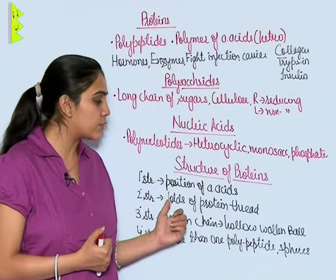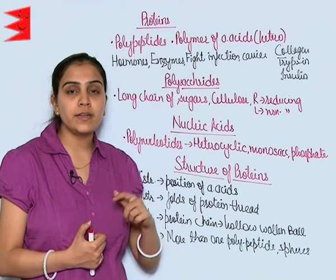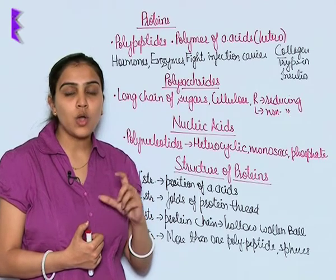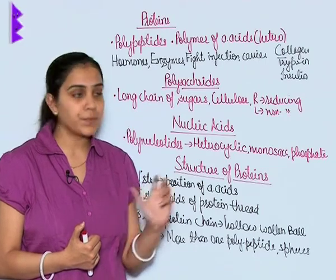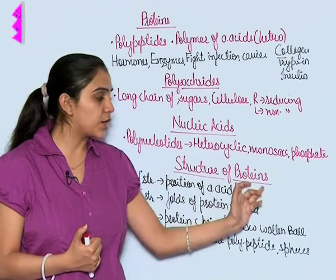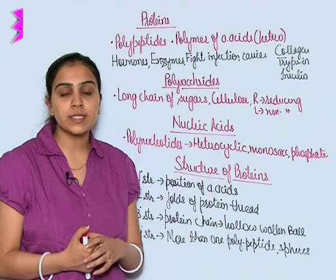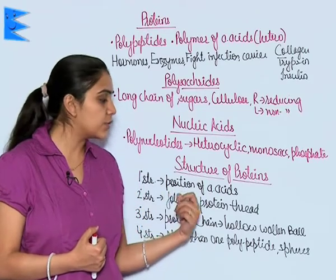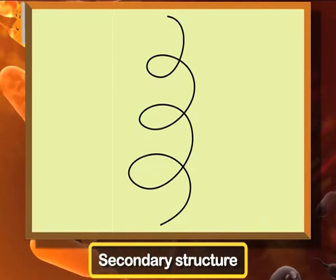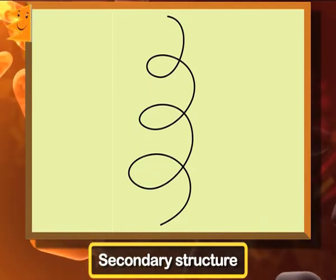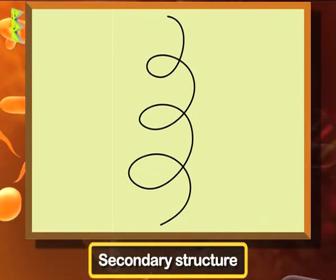Secondary structure. There are usually right-handed helix folds of the protein thread in the structure of proteins, and other regions of folds give rise to the secondary structure. You can see these turns of threads in the diagram. This is the secondary structure of protein.